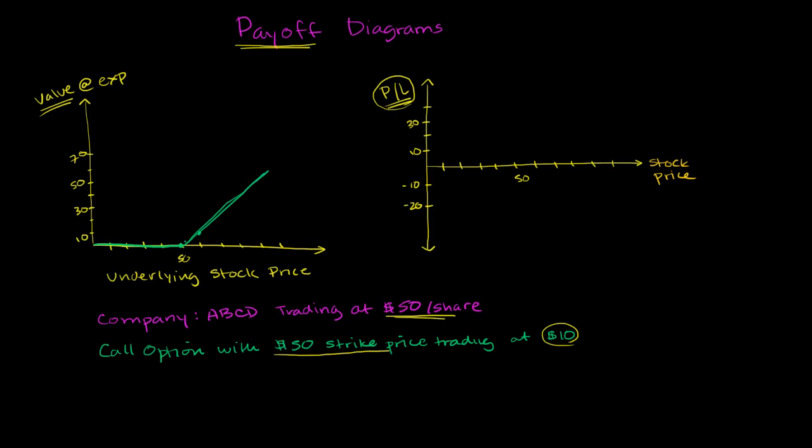Now, if you do it in the profit and loss model, all you have to do is incorporate what you actually paid for the option. So in this situation, below $50, you still would not actually exercise your option, because why would you pay $50 for something that's actually trading for less than $50.